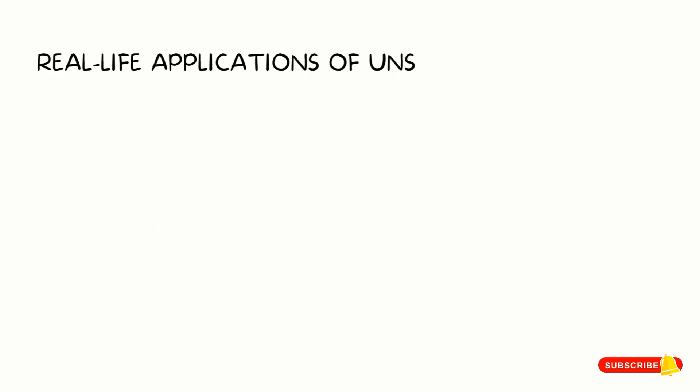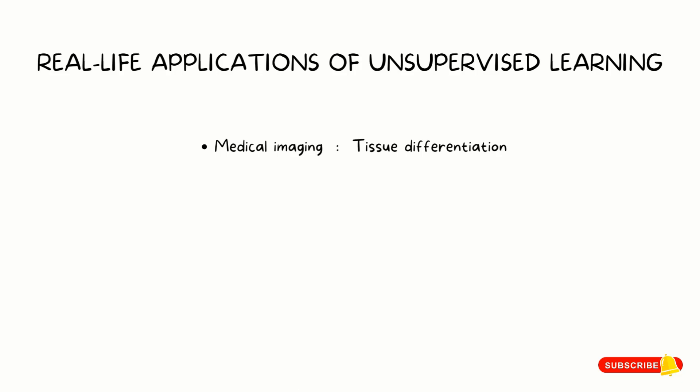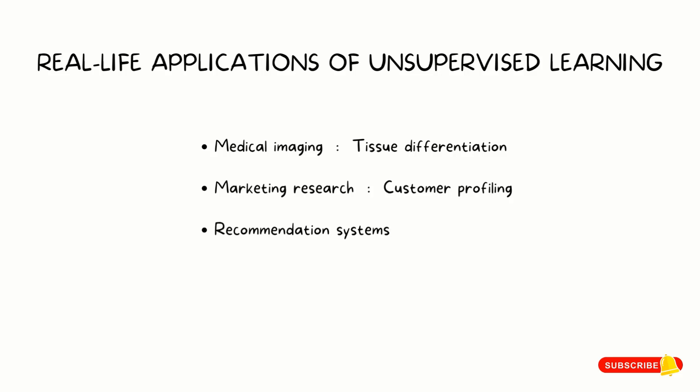Some real-life applications of unsupervised learning include medical imaging for distinguishing between different kinds of tissues, marketing research where customers are grouped and differentiated based on attributes, and recommendation systems such as on Amazon where you are given suggestions on what to buy based on what you've bought recently, and also used by Netflix and other movie applications where suggestions are based on what you've watched recently.